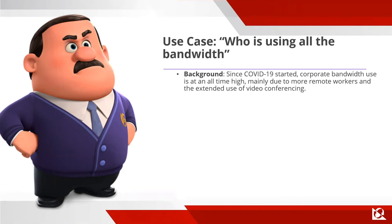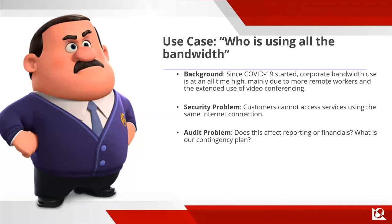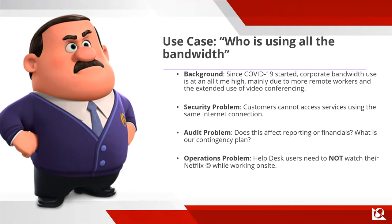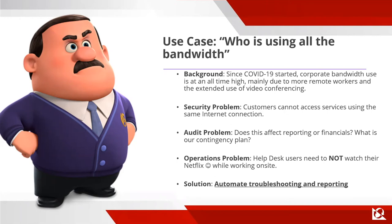I find out who's using all the bandwidth. I could even take it a step further and use something like Shodan as another API — take the output from the ASA or ISE, take the IP they're connecting to, go get that page, even take a screenshot of it. All automated. From a use case perspective: since COVID started, bandwidth is at an all-time high and customers can't get in because remote workers are using video conferencing. The solution is to automate the troubleshooting and reporting, so the network administrator doesn't get a call.